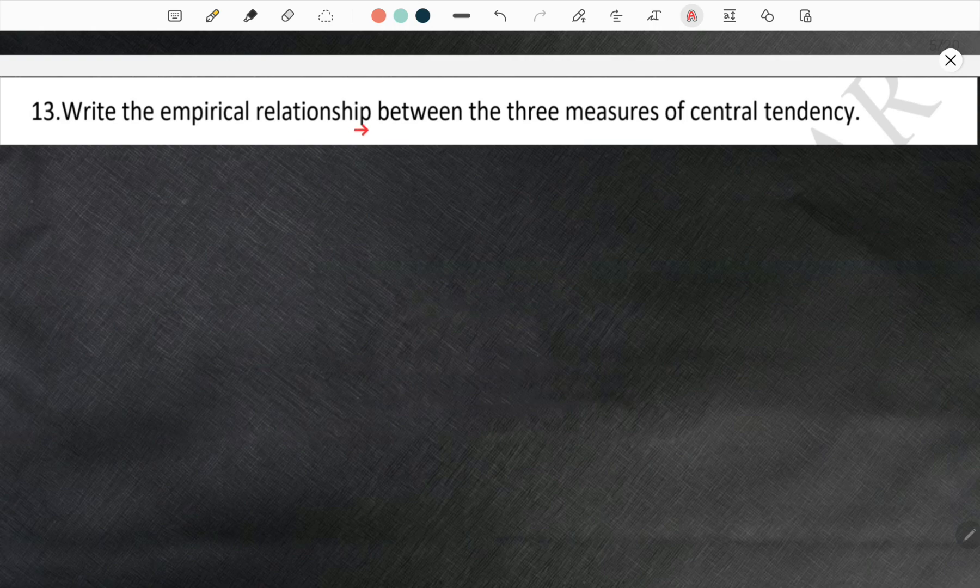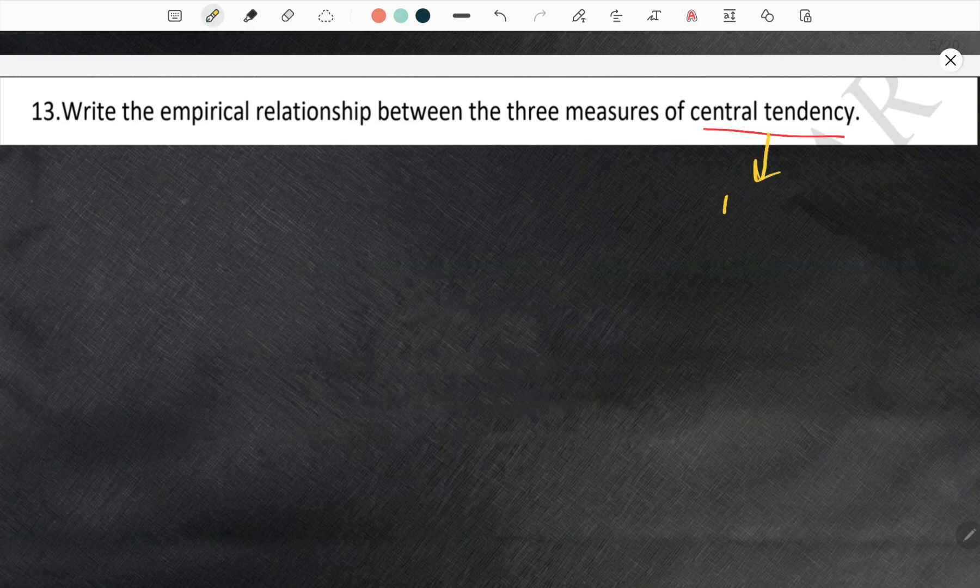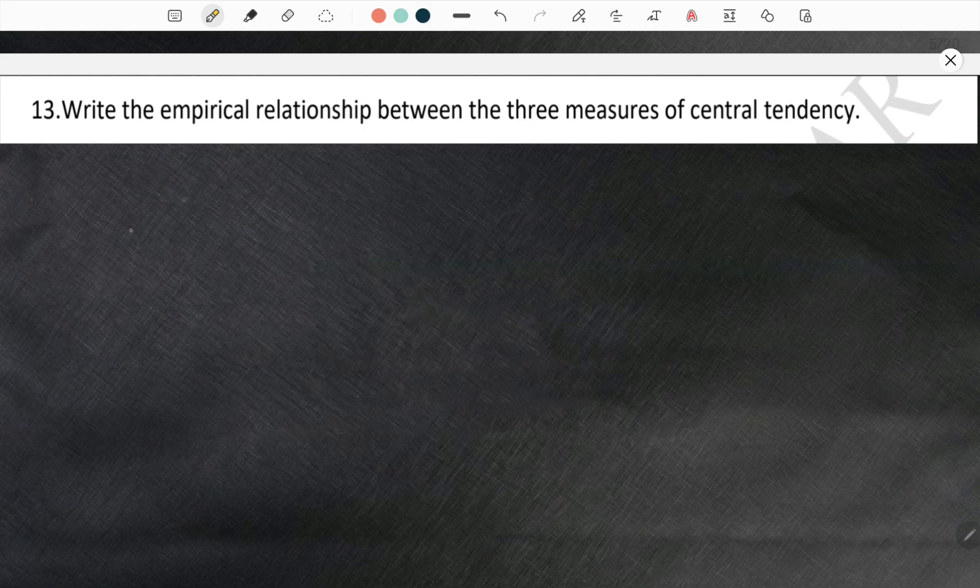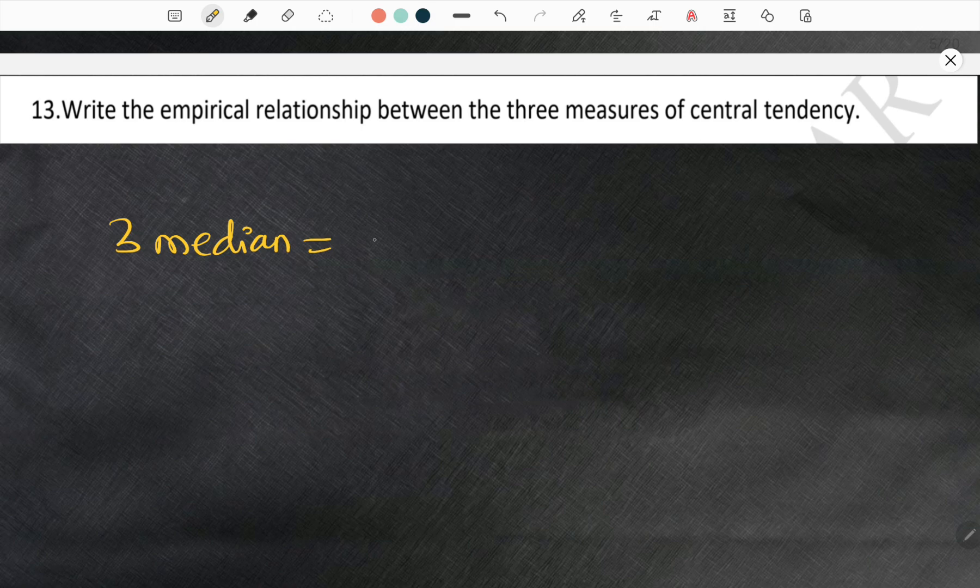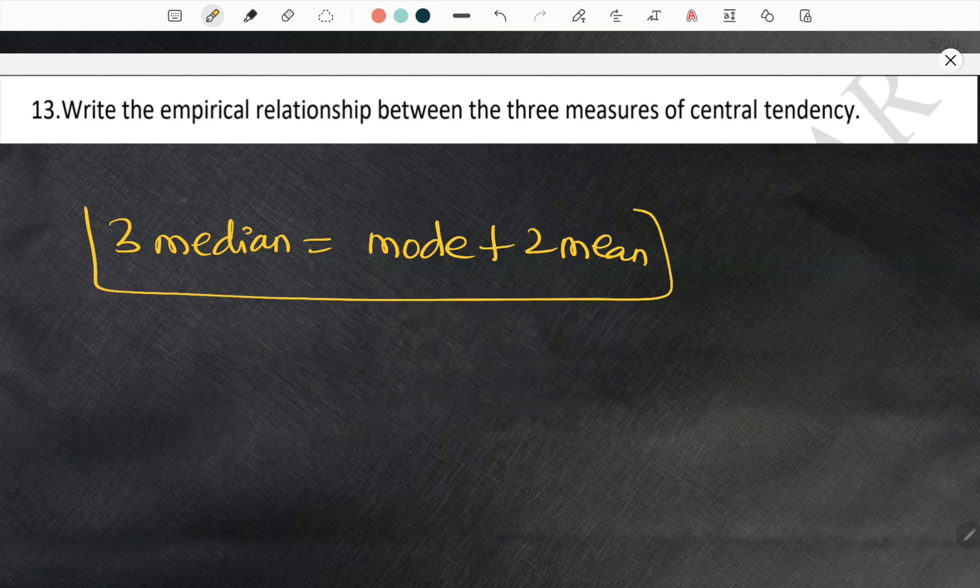Moving forward to the thirteenth question. Write the empirical relationship between the three measures of central tendencies. You know what are central tendencies, right? Central tendencies are mean, mode and median. The relation is 3 median is equal to mode plus 2 mean.